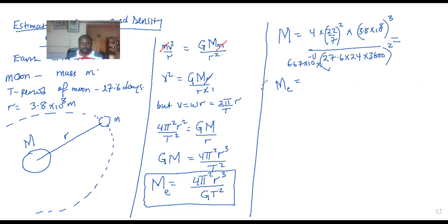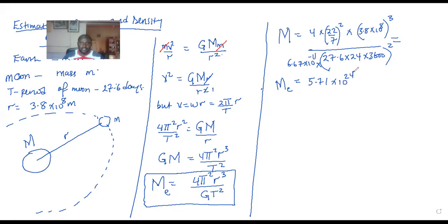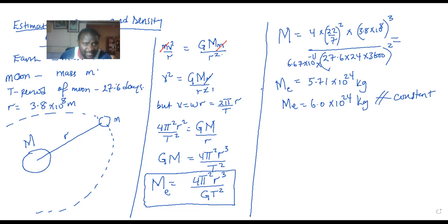The correct answer obtained is approximately 5.71 to 8.24. The teacher confirms this is correct. Sometimes they give the mass as that; sometimes they round it off. The mass of the earth is 6.0 times 10 to the power of 24 kilograms — it is a constant. They can ask you to show that the mass of the earth is that. If you use 28 days you get close; if you use 30 days you get something slightly above 6.